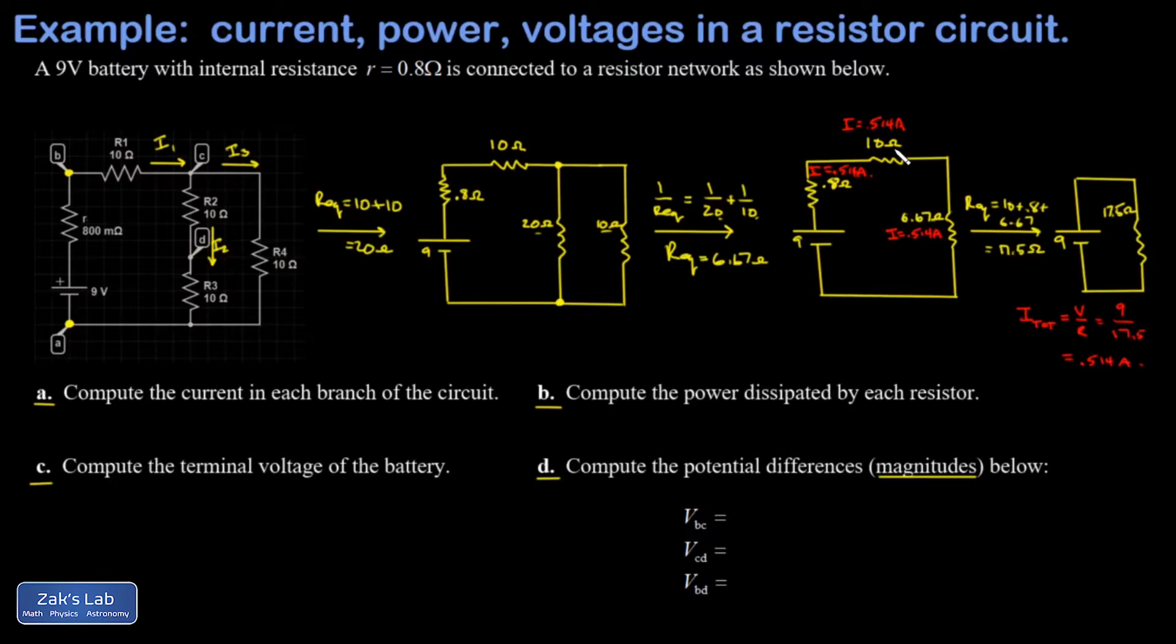Since we have the current and the resistance on those three resistors, then we can find the voltage drop over all three of those. V is IR, so I'm going to take 0.514 amps and multiply it by 6.67 ohms on this resistor, and I get a voltage drop of 3.43. Then I'll get this one, the 10 ohm resistor at the top. So I take IR again, so 0.514 times 10, that's 5.14 volts. And finally, I get the voltage drop on the internal resistance, 0.514 amps multiplied by 0.8 ohms, and I get 0.411 volts for that voltage drop.